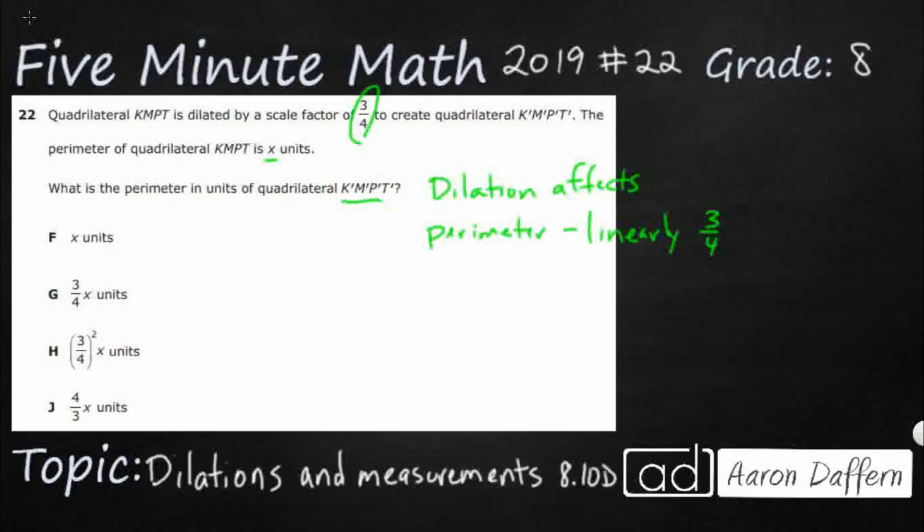But area, which we're not necessarily dealing with, but we might have to in future STAR problems, it's quadratically. So that means that since you're multiplying the side lengths by each other to find the area, it's whatever your dilation squared. So the dilation affects each of these differently.